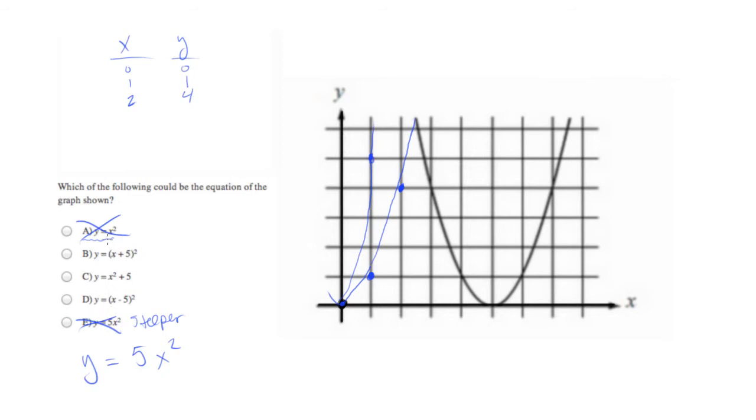But we do need to take this whole function and shift it over to the right. And we need to go over to the right one, two, three, four, five spots to the right. Now, to shift things to the right, what you should do is start with your original function again.